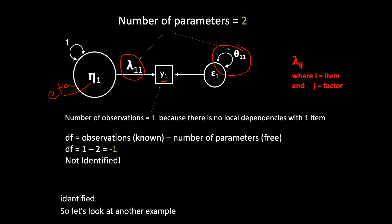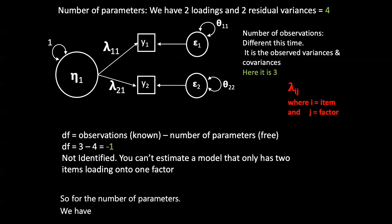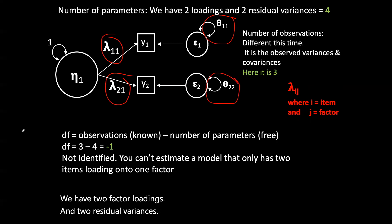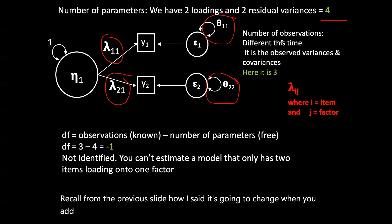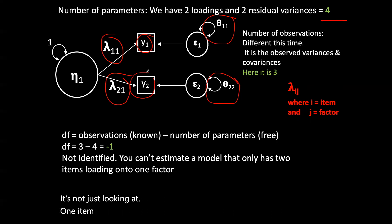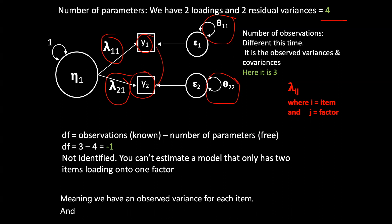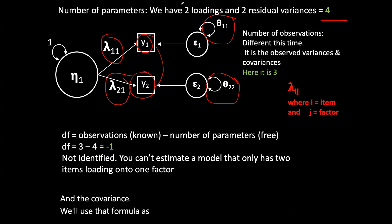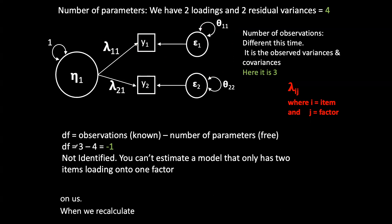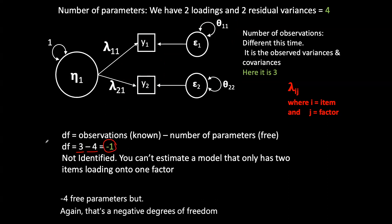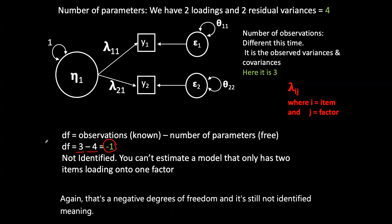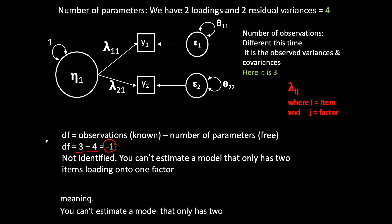In the next example with two items, we have two factor loadings and two residual variances, so the number of parameters is four. The number of known observations is three — because we now have an observed variance for each item and a covariance between them. When we recalculate degrees of freedom: three known minus four free parameters gives us negative degrees of freedom — still not identified. You cannot estimate a model that only has two items loading onto one factor.